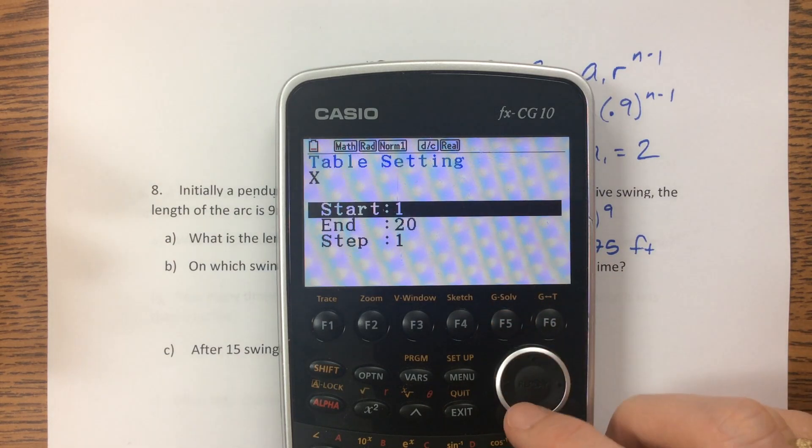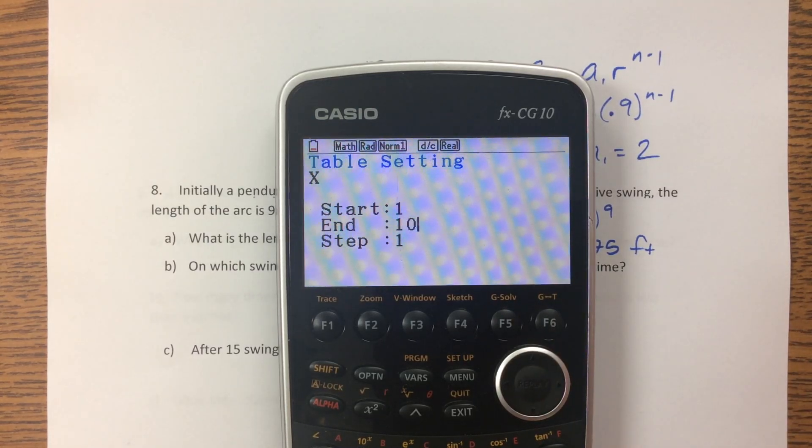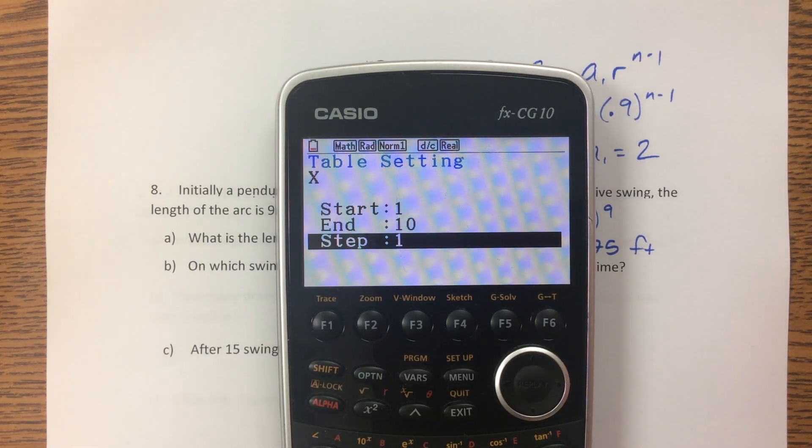So I can tell it where to start and where to stop. Oh, that's funny, it says 20. Typically it stops at 5. I must have changed it at some point along the way. But we know the 10th one is 0.775, so let's just do 10. We know the answer is going to be somewhere before that.